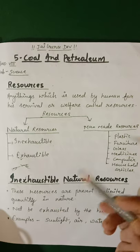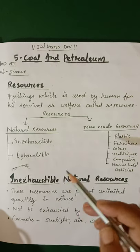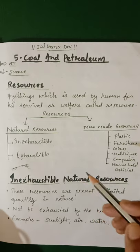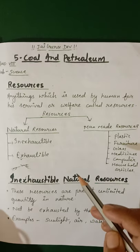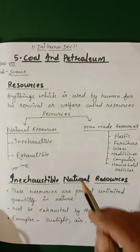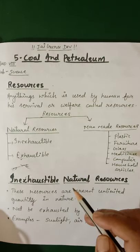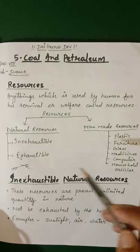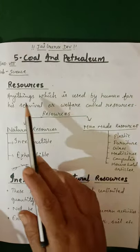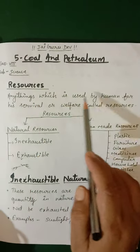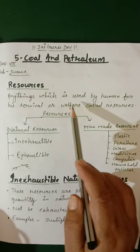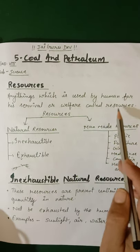And some we get from human efforts — that is, materials made by humans — like furniture, glass, vehicles, computers, medicines, household articles, etc. These all are called resources. So resources: anything which is used by humans for their survival or welfare is called a resource.